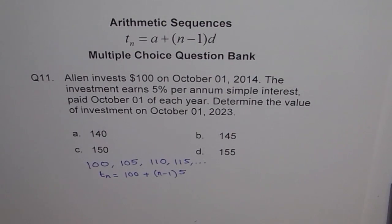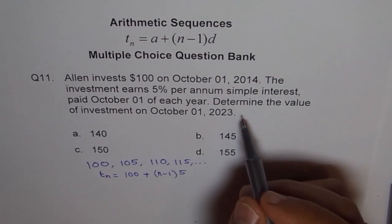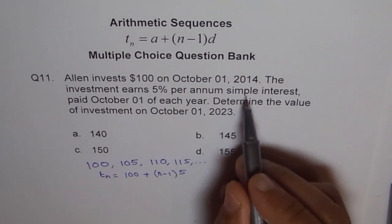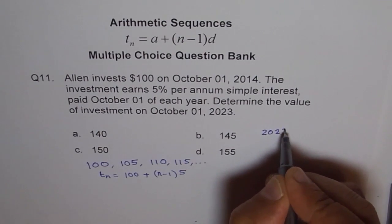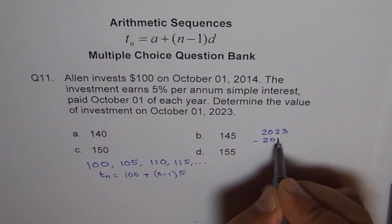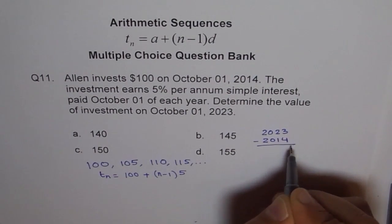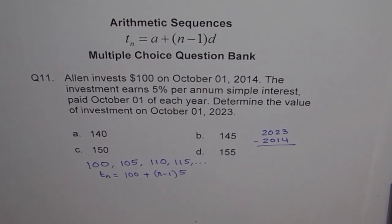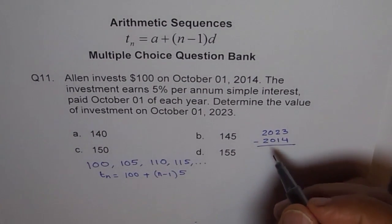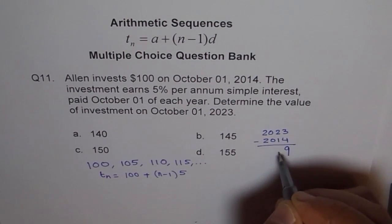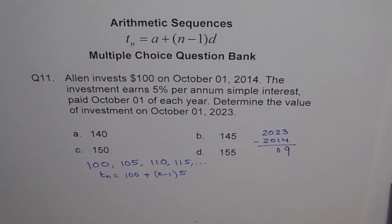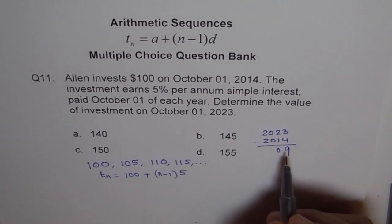Now, what is n? To find n, we need to find difference between 2023 and 2014. So we have 2023 minus 2014. So how many years? We get 13 minus this one, 0, 9 years. So 9 years in all, afterward.